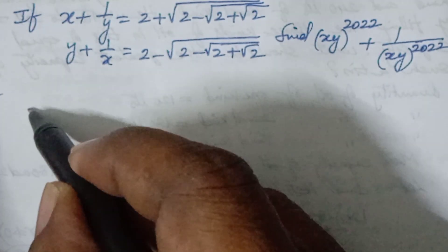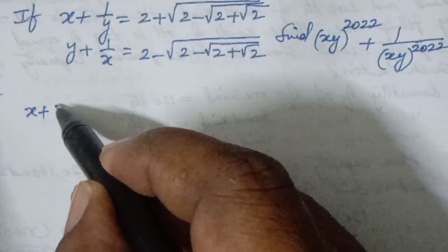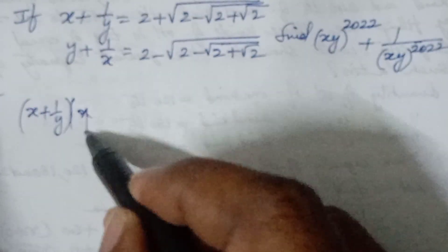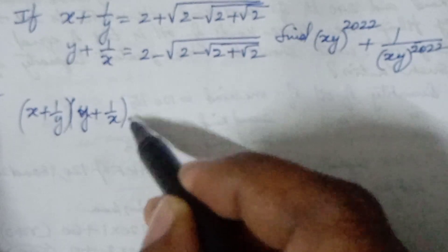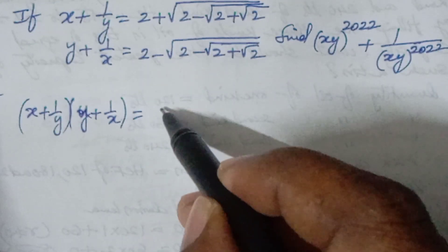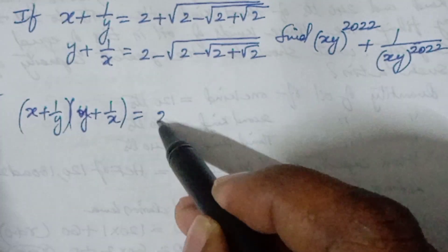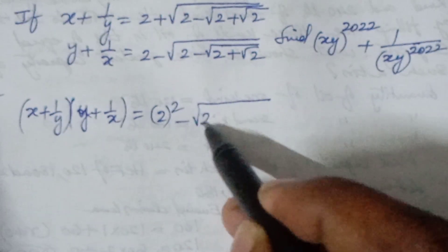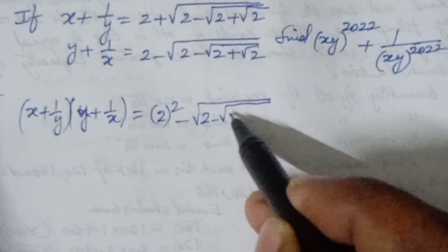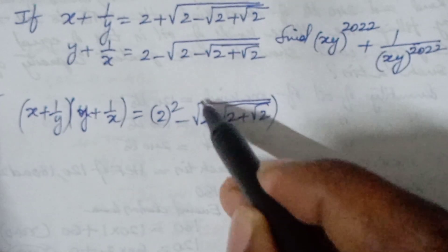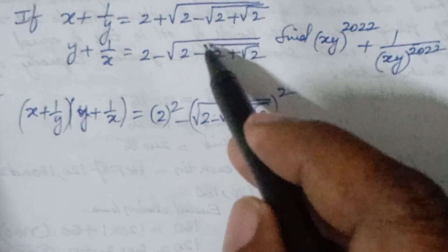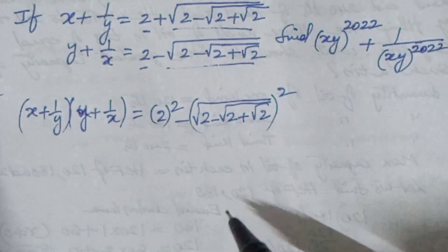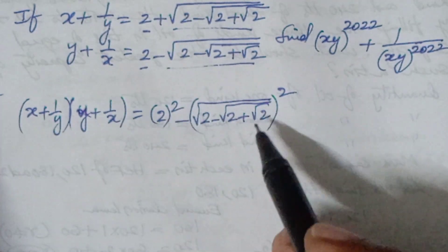First of all, I am multiplying both of these equations together. We use the identity a plus b into a minus b, where this is a and this is b — so we get a squared minus b squared.